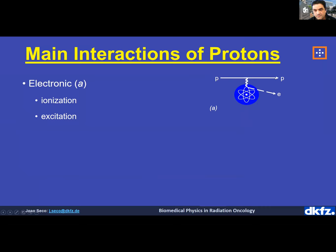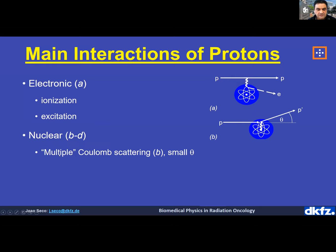We have photon ionization and excitation, where the proton comes through and can either excite or ionize an electron — either ejecting it or exciting it without ejection. We can also have a nuclear interaction: Coulomb scattering, which is elastic scattering over a nucleus. As the proton crosses the medium it undergoes many Coulomb scatterings — multiple Coulomb scattering is a multi-step process.